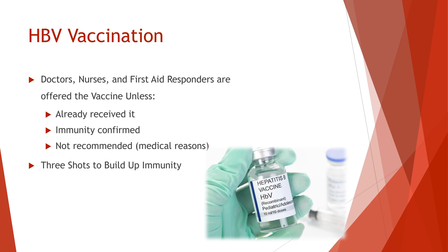The second shot is given one month after the first. The third shot follows five months after the second. This series is designed to gradually build up the body's immunity to the Hepatitis B virus.